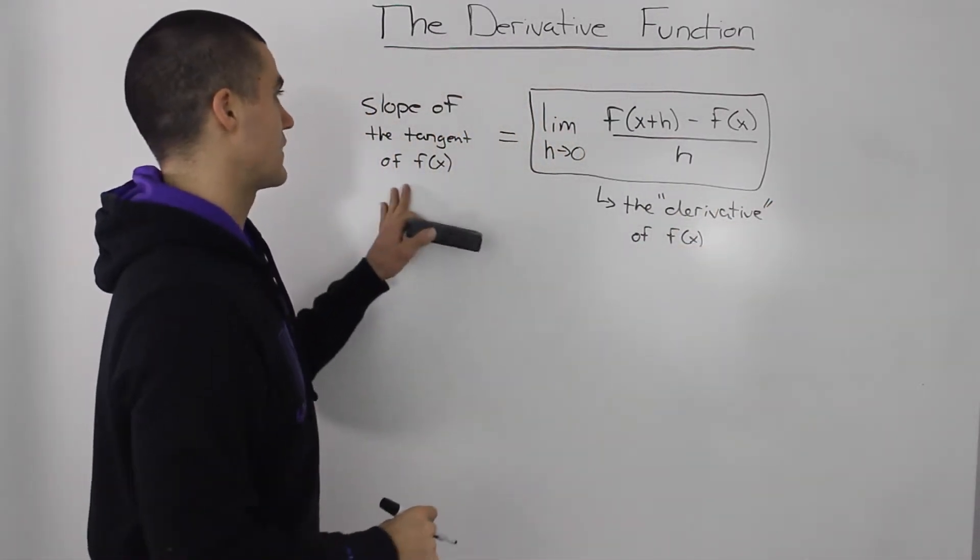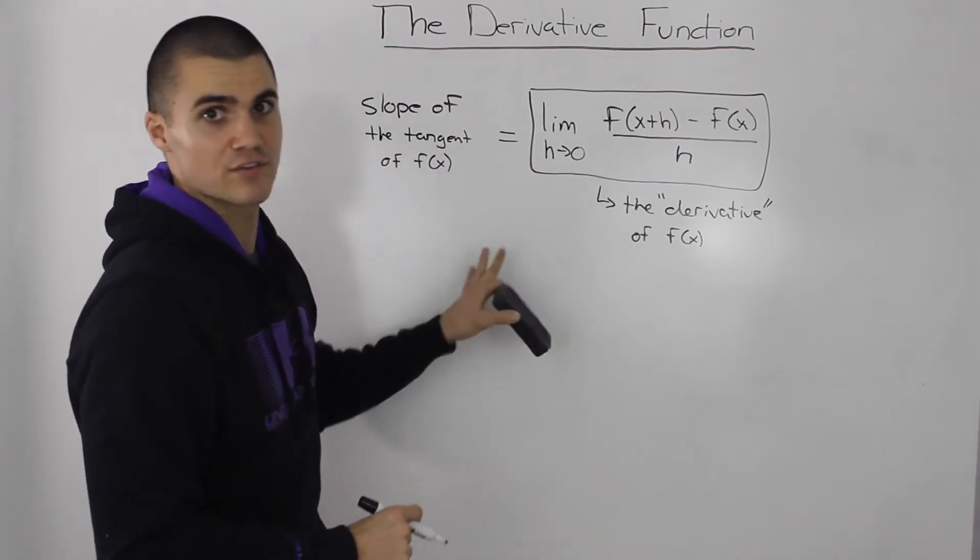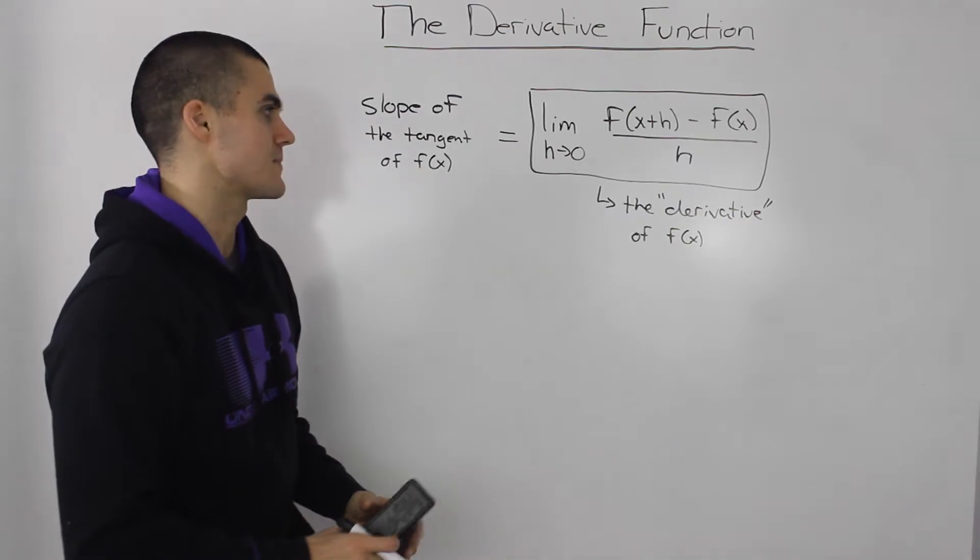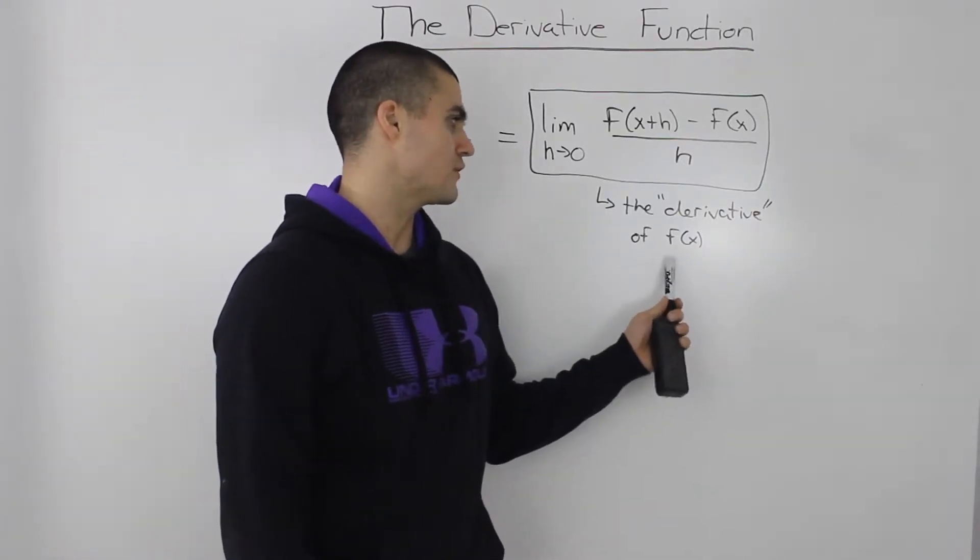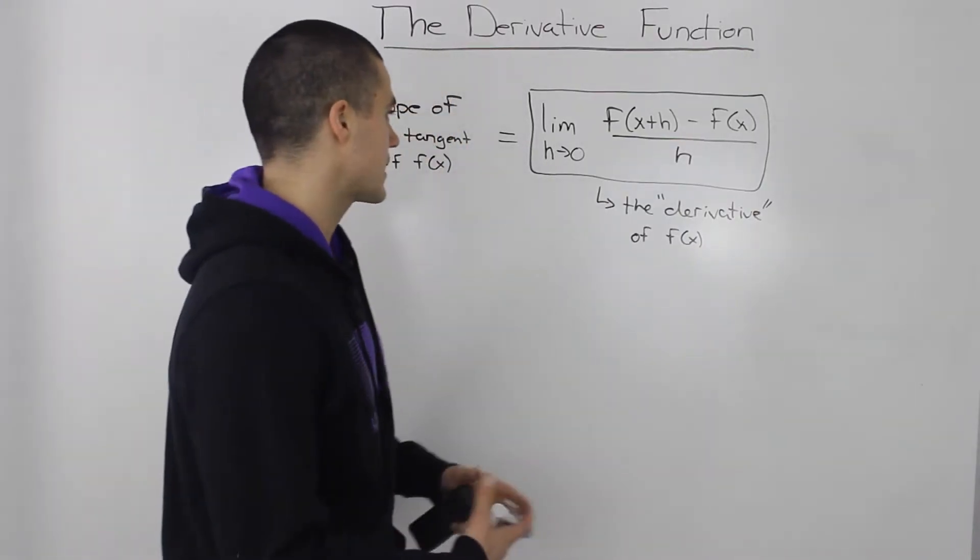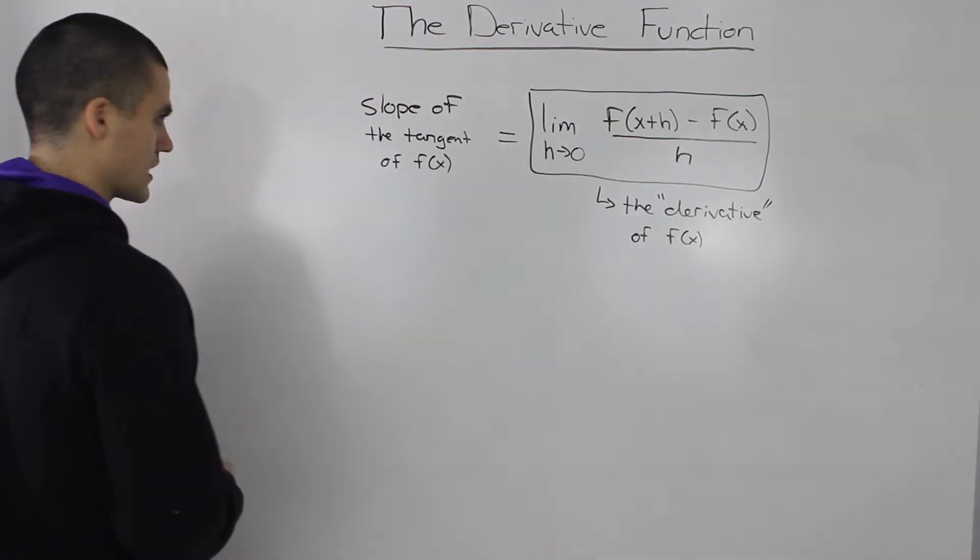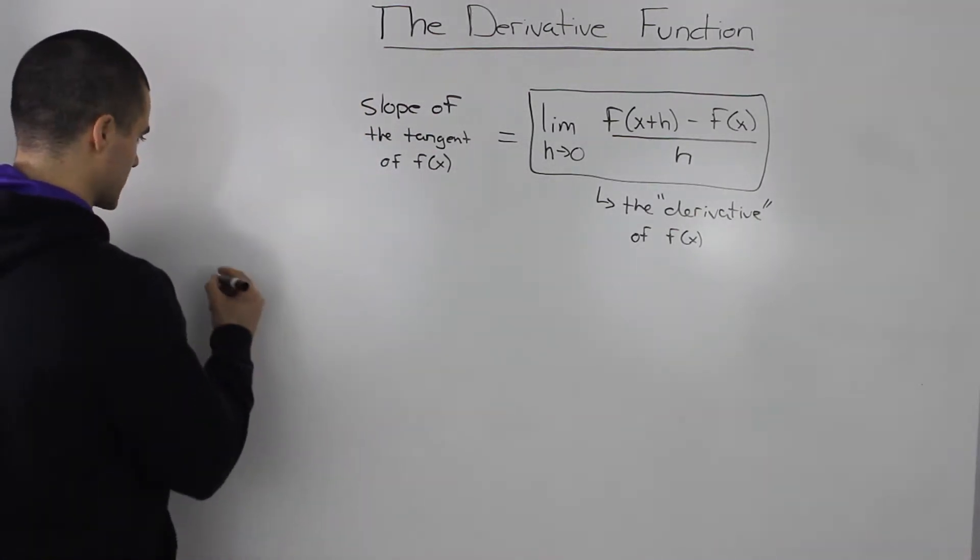So instead of saying let's find the slope of the tangent of f of x, they just say let's find the derivative of f of x. Now the derivative of f of x, it could take different types of notation.